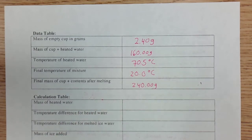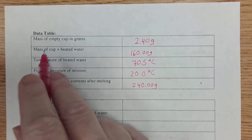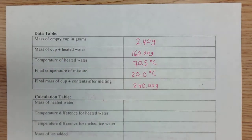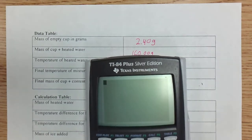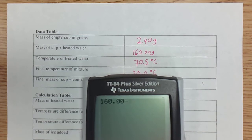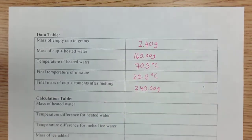So how do we find the mass of the heated water? What we need to do is take the cup and water minus the empty cup. So here on the calculator, that is 160.00 minus 2.40. And that gives us 157.6 grams.